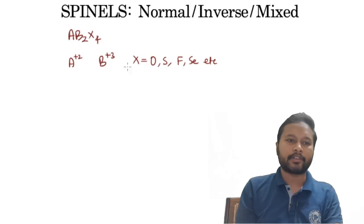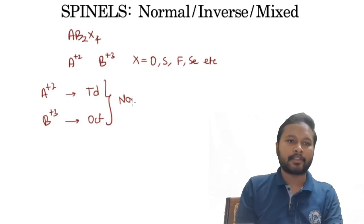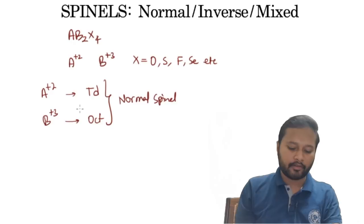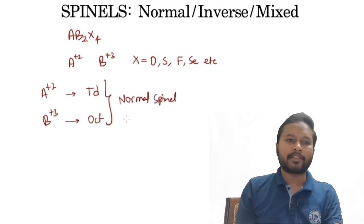In a normal spinel, the dipositive cation A²⁺ goes into the tetrahedral voids and the tripositive cation B³⁺ goes into the octahedral voids. So a normal spinel is defined by A²⁺ occupying tetrahedral voids and B³⁺ occupying octahedral voids.